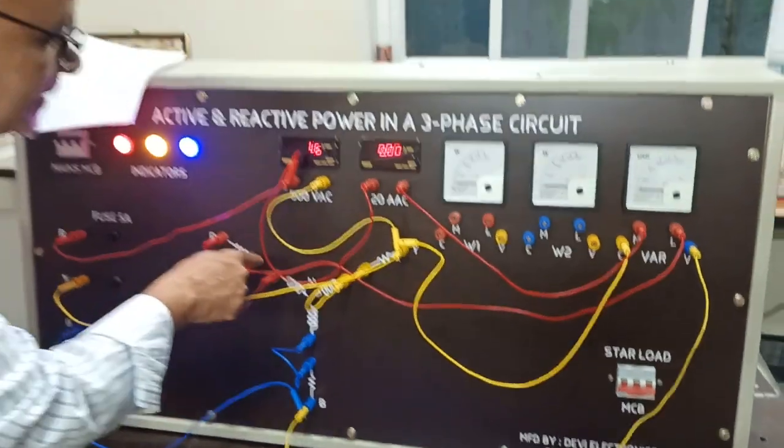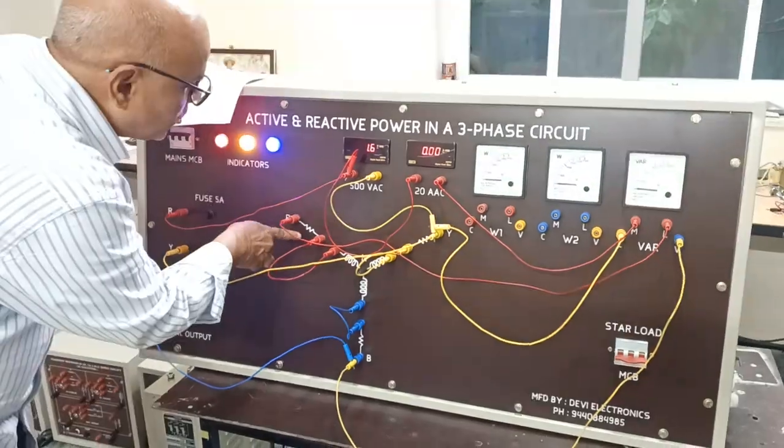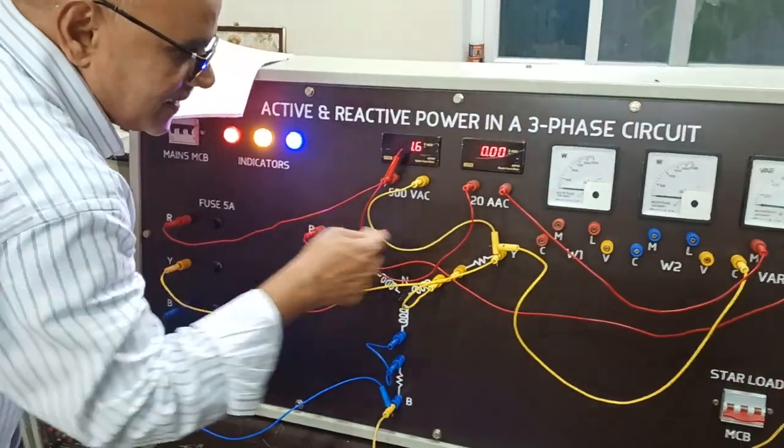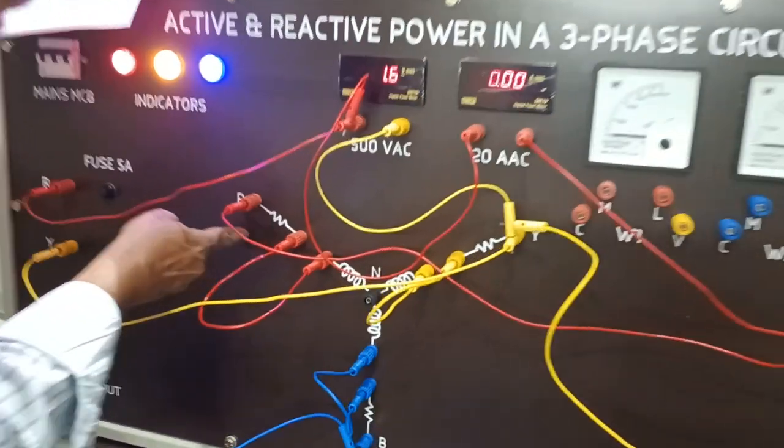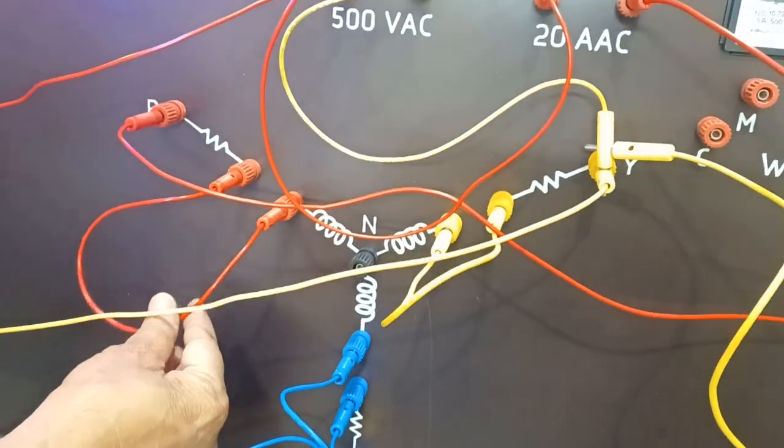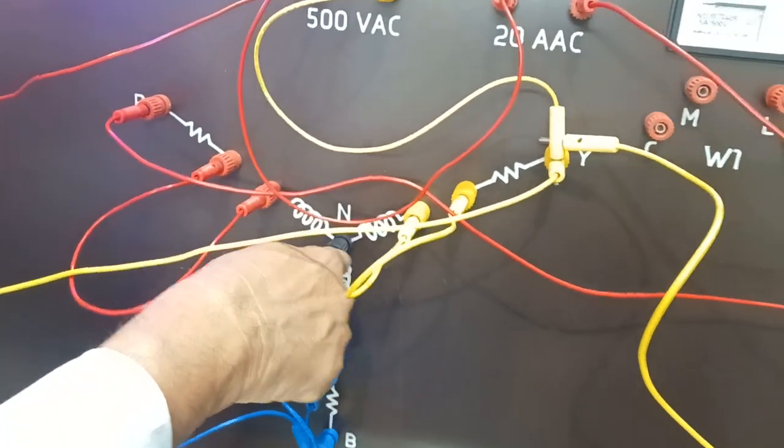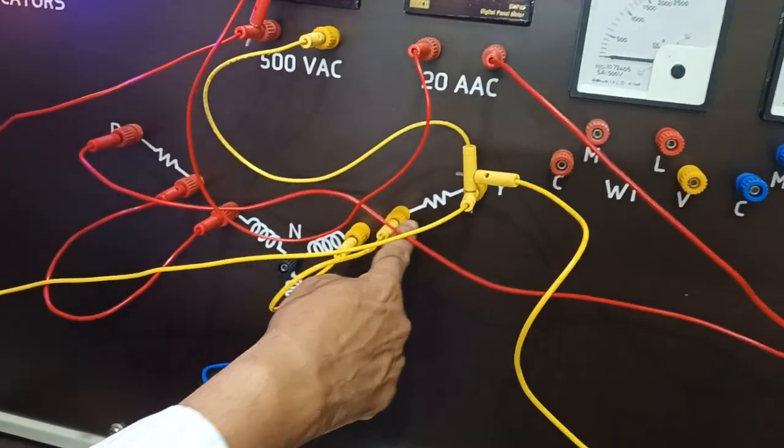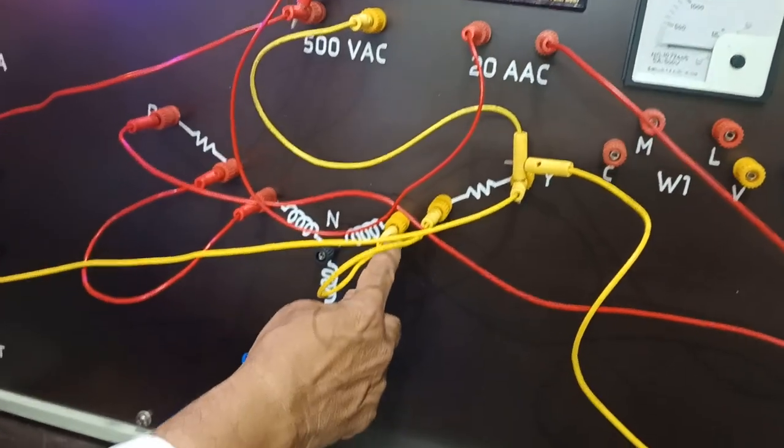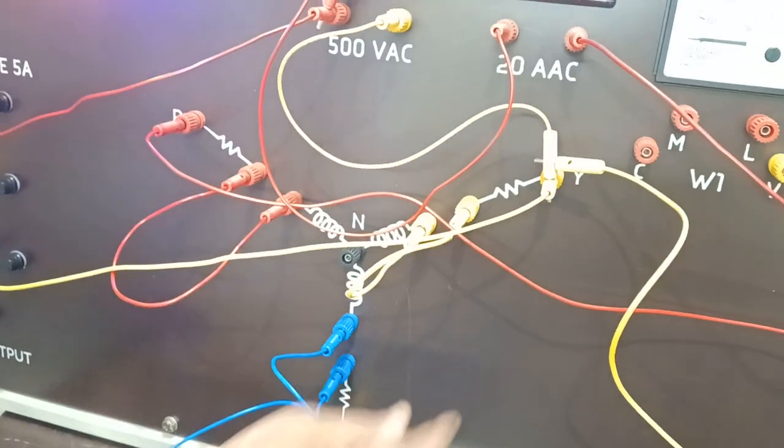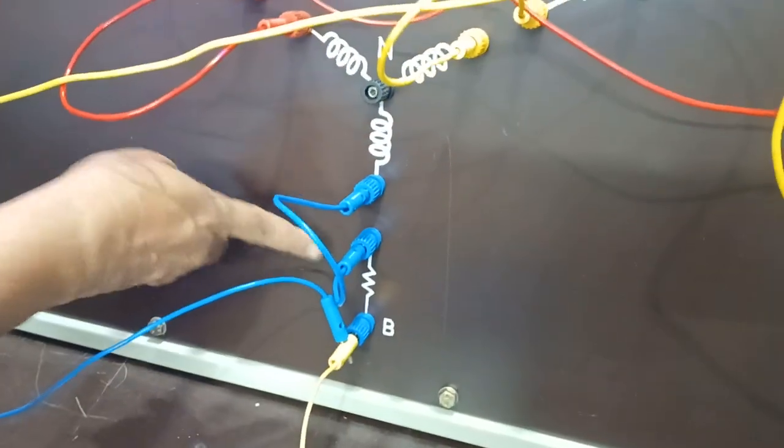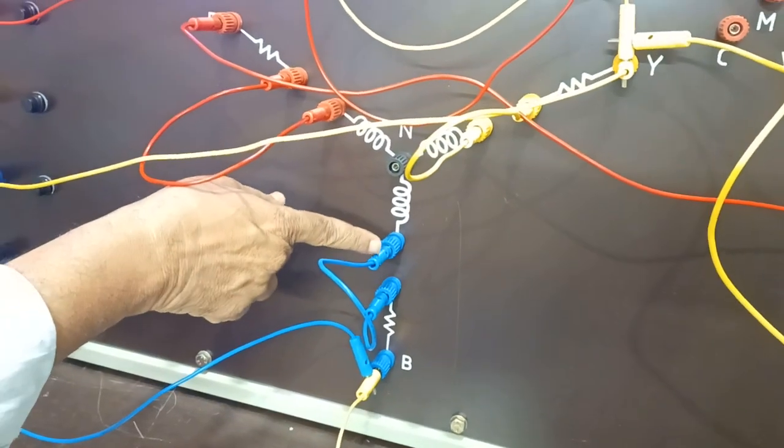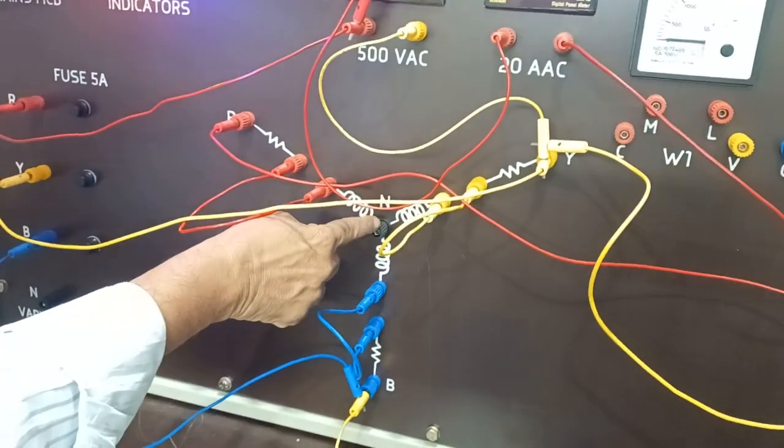In this case we are going to connect R and L in series. If this is R, the other end connects to L starting point and the other end of L becomes the star point. Similarly for Y phase - the other end of the resistor to the starting end of the choke. In a similar manner for B phase, the other end of the resistor connected to the starting point of the choke.